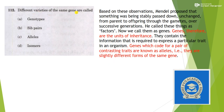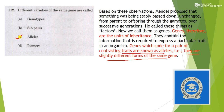Next: different varieties of the same gene are called? Genes which code for a pair of contrasting traits are also known as alleles — they are slightly different from the same gene. So different varieties of the same gene are known as alleles.